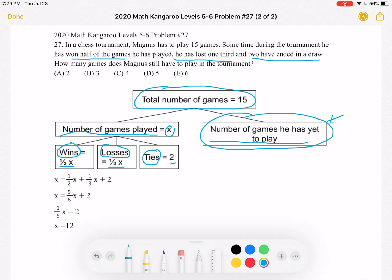So, like I said earlier, we can write X, the total number of games he has played, as being a sum of the wins plus losses plus ties, which we have just established are one half X, one third X, and two.